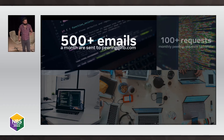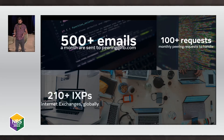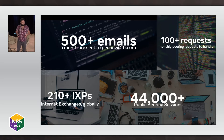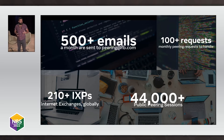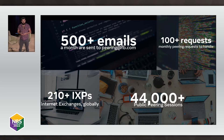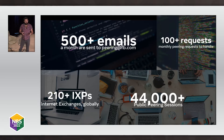Talking about the problem we're trying to solve here — we operate a large CDN, we operate a large network connected to multiple IXs globally. We're connected to an excess of 210 internet exchanges globally. Being connected to a lot of internet exchanges and being in a lucky position that people really want to peer with us to get their cat pictures means we get lots of requests for peering. We get about 500 emails per month to our peering@fb.com mailbox, and about 100-plus of those emails are genuine peering requests we need to handle. That means in excess of 44,000 public peering sessions we've got configured globally, and that keeps rising.